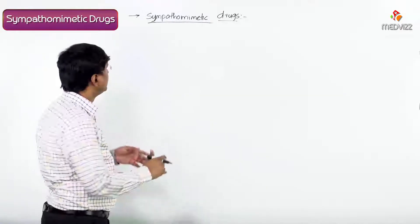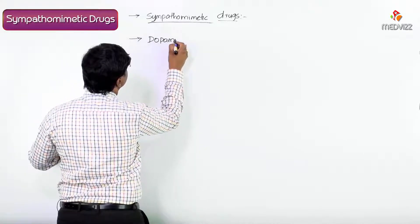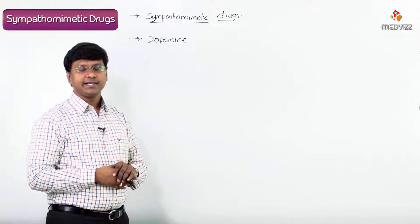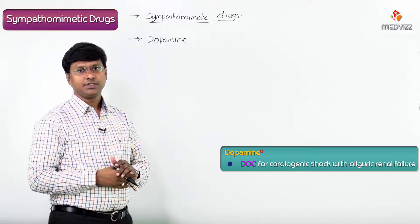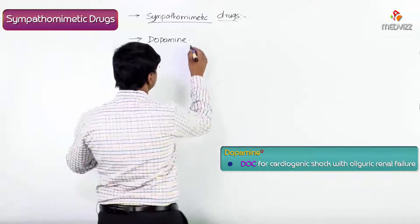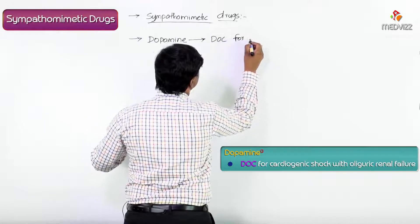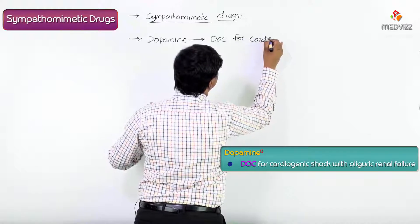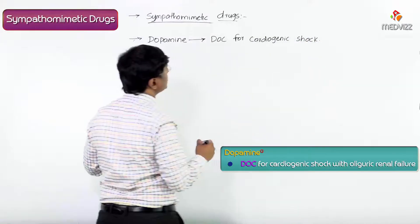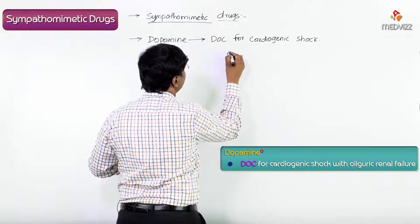Moving to other sympathomimetic drugs — among the catecholamines, dopamine is a very important drug. It is the drug of choice for cardiogenic shock with oliguric renal failure.